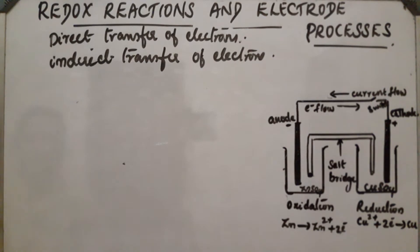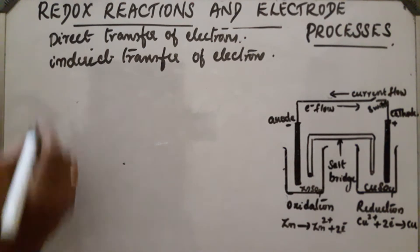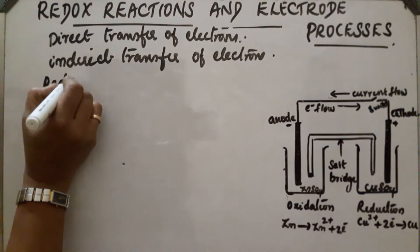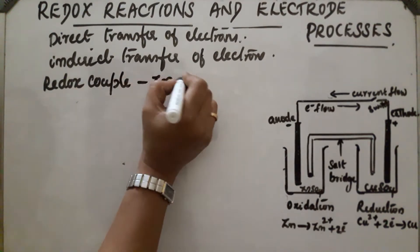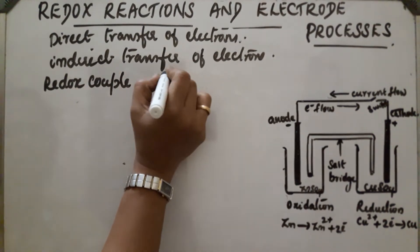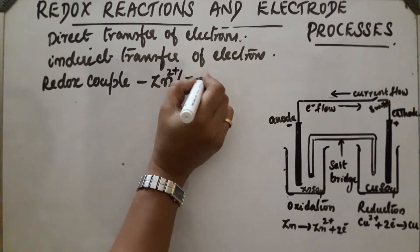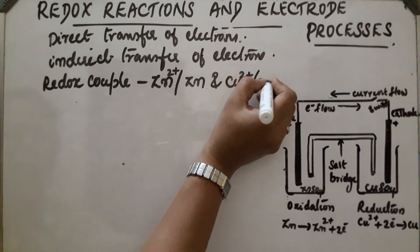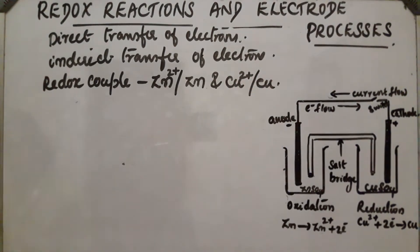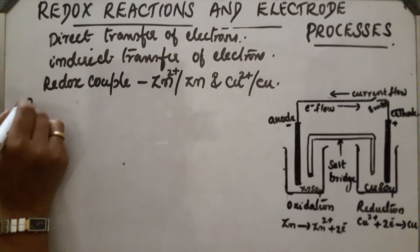Now each beaker contains both the oxidized and reduced form of the same substance. This is called a redox couple, and it can be represented as Zn²⁺/Zn and Cu²⁺/Cu. This is the redox couple.